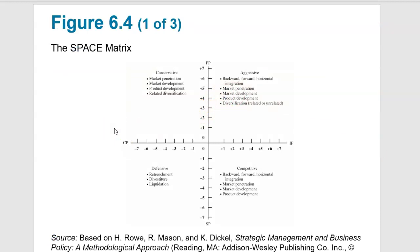Now let's move into the SPACE matrix. SPACE stands for Strategic Positioning and Action Evaluation. It's a stage-two matching tool that uses two axes and four quadrants to reveal whether aggressive, conservative, defensive, or competitive strategies are appropriate for a given situation. There are two internal dimensions—the financial position and the competitive position—and two external dimensions: the stability position and the industry position.